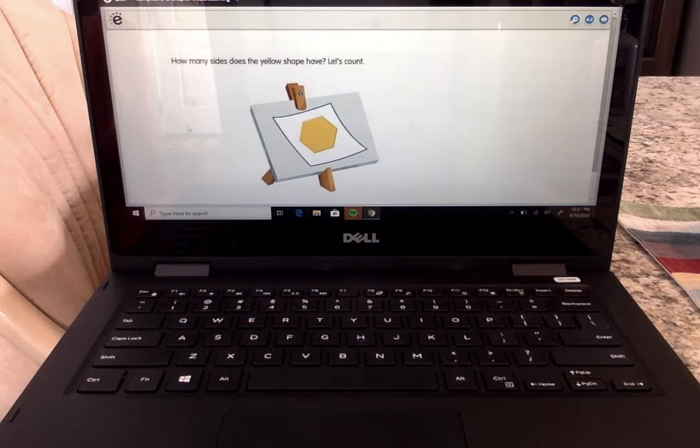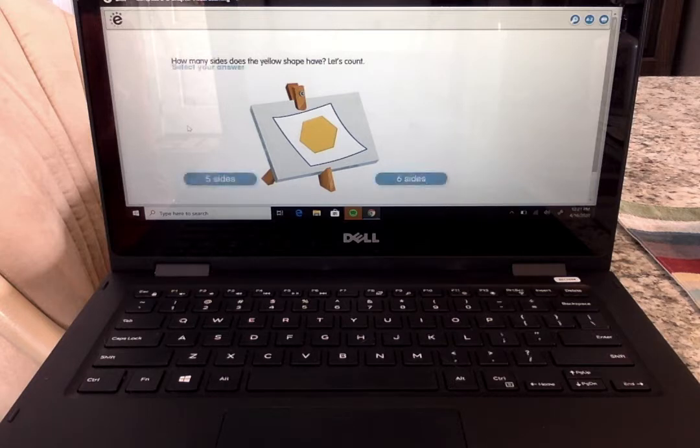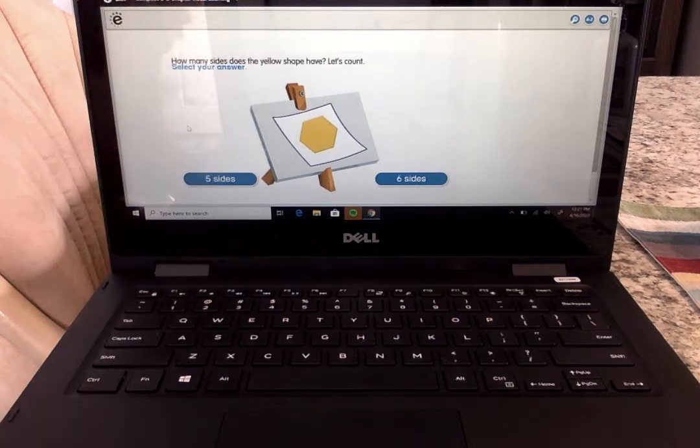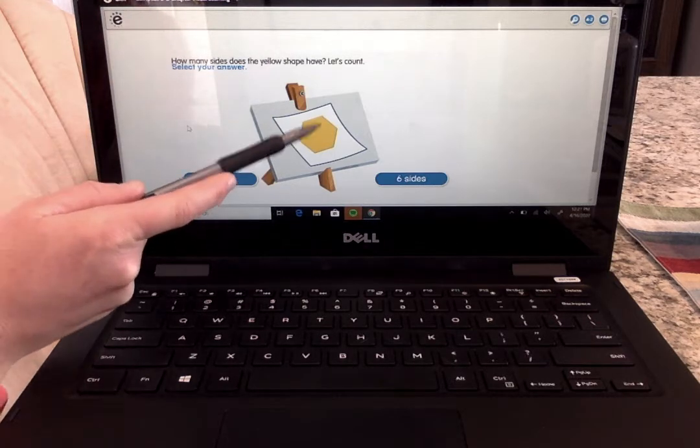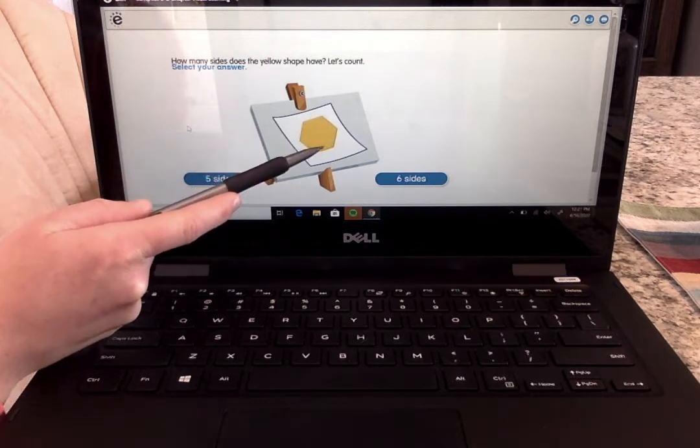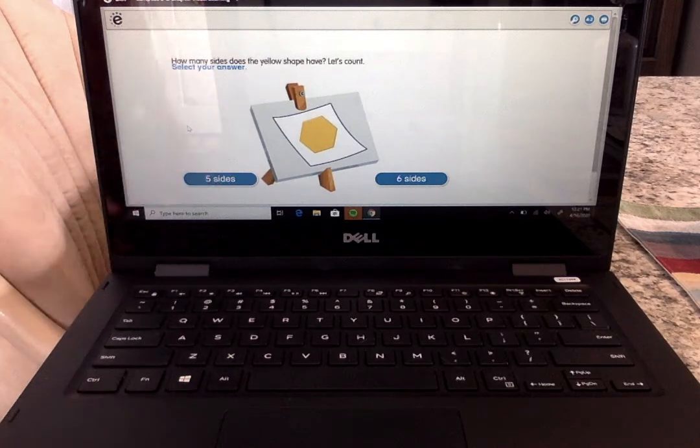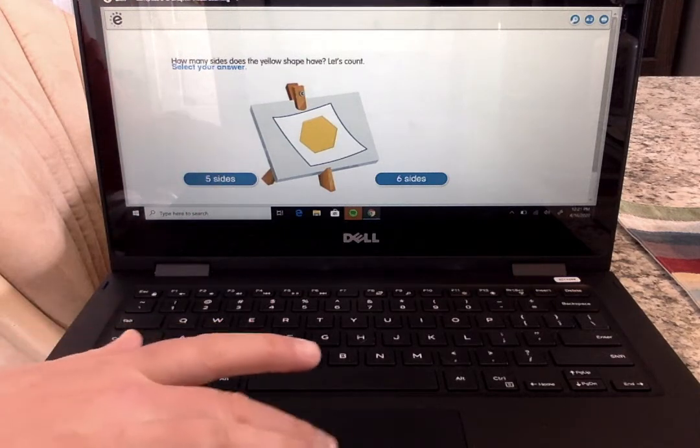How many sides does the yellow shape have? Let's count. Select your answer. So if you're listening, let's count though. Let me, or with my pencil. We have one, two, three, four, five, six. The hexagon. Six sides.